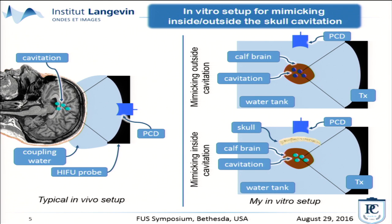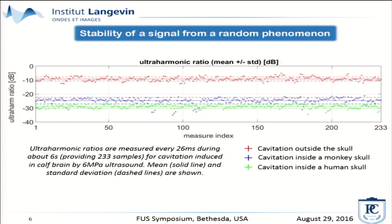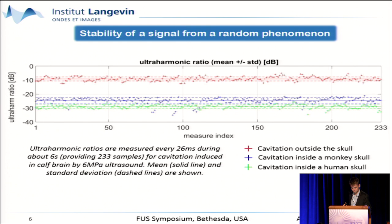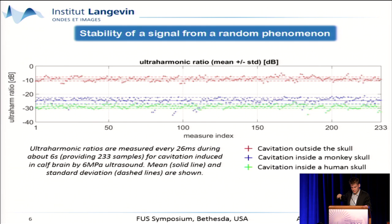So what is the stability of the ultra-harmonic ratio? We measured this ratio every 26 milliseconds during six seconds: for cavitation outside the skull in red, cavitation from inside a monkey skull in blue, and from a human skull in green. You can note that these ratios are stable enough to find a threshold between cavitation inside and outside the skull.